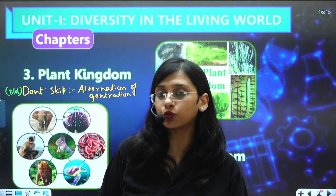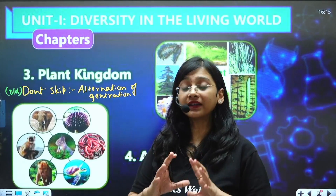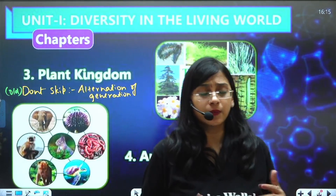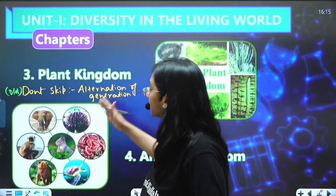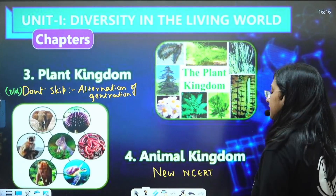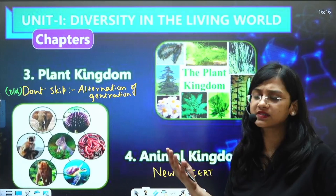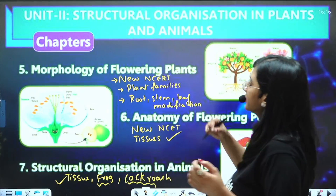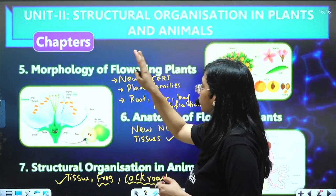For Plant Kingdom, in new NCERT the concept of alternation of generation has been removed. However, it is better to study it from old NCERT for better understanding, since you will be studying gametogenesis and sporogenesis. For Animal Kingdom, you can use either NCERT — the content is the same in both old and new versions.